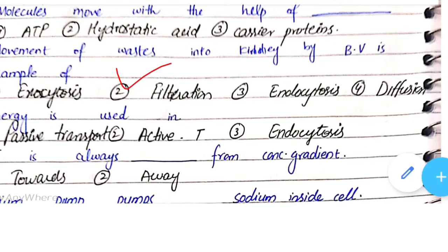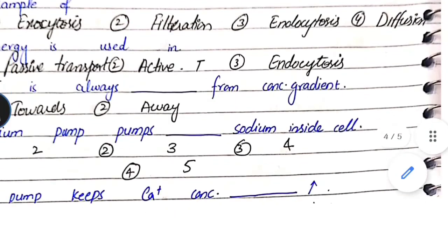Energy is used in active transport. Active transport is always away from the concentration gradient — from an area of low concentration to high concentration.